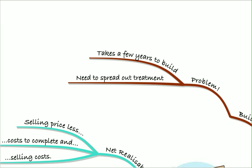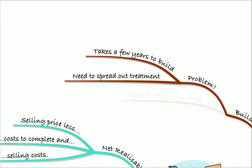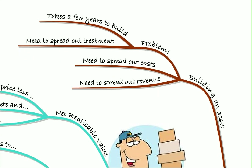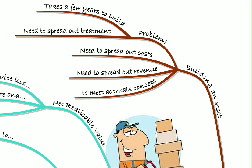I.e. we need to spread out the revenue and the costs that we're going to have on building that asset and spread out the profit recognition over the time that it takes to build it. So we need to spread out the costs and we need to spread out the revenue. And we need to do that to meet the accruals concept rather than recognizing all the costs and revenue at the end of the contract.